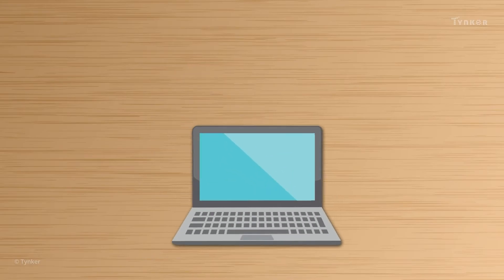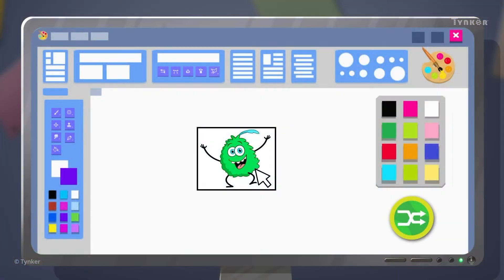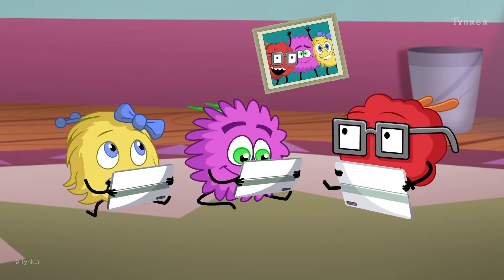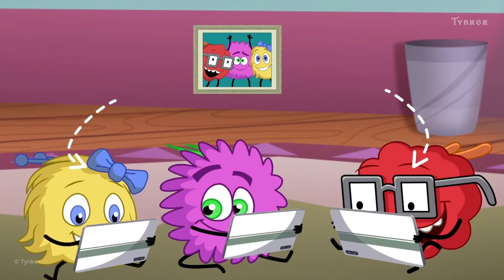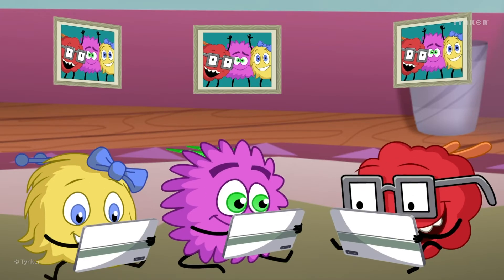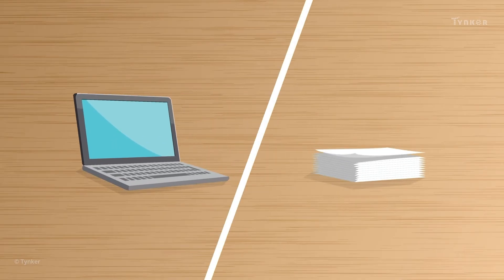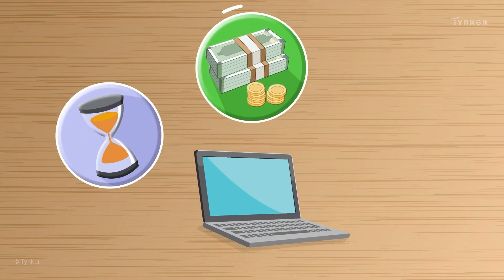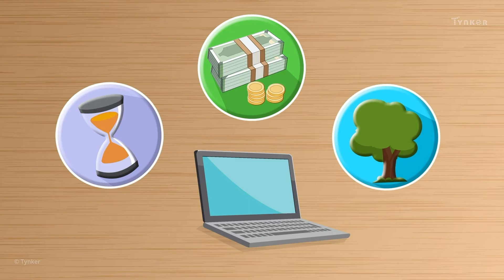Digital data has many amazing features. It can be copied many times and modified easily. It can also be easily shared with your friends. And that's not all — with digital data, you don't need to use paper to print books. It saves time and money, and protects a lot of trees from being cut down to make paper.